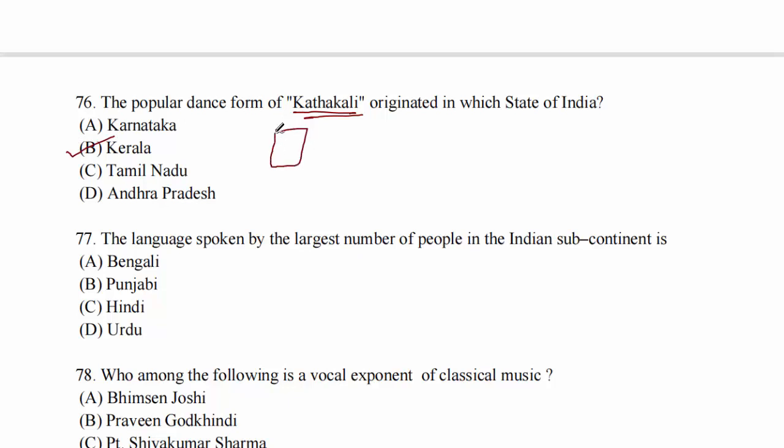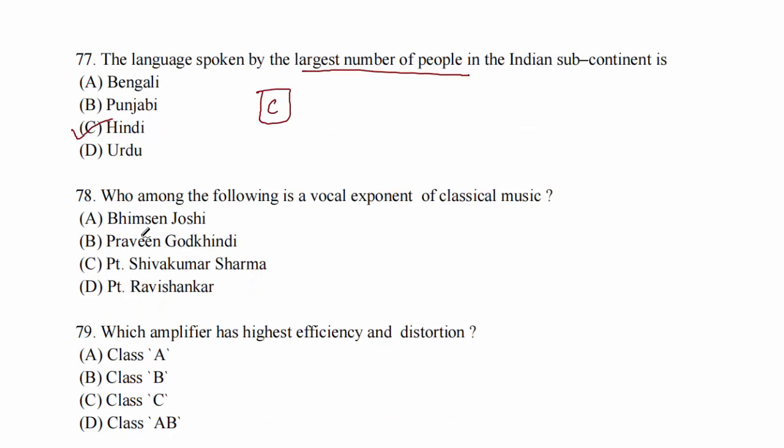Question 76: the popular dance form Kathakali originated in which state of India? Kerala. Option C. Question 77: the language spoken by largest number of people in the Indian subcontinent is Hindi. Option C. Question 78: who among the following is a vocal exponent of classical music? Bhimsen Joshi. Option A.